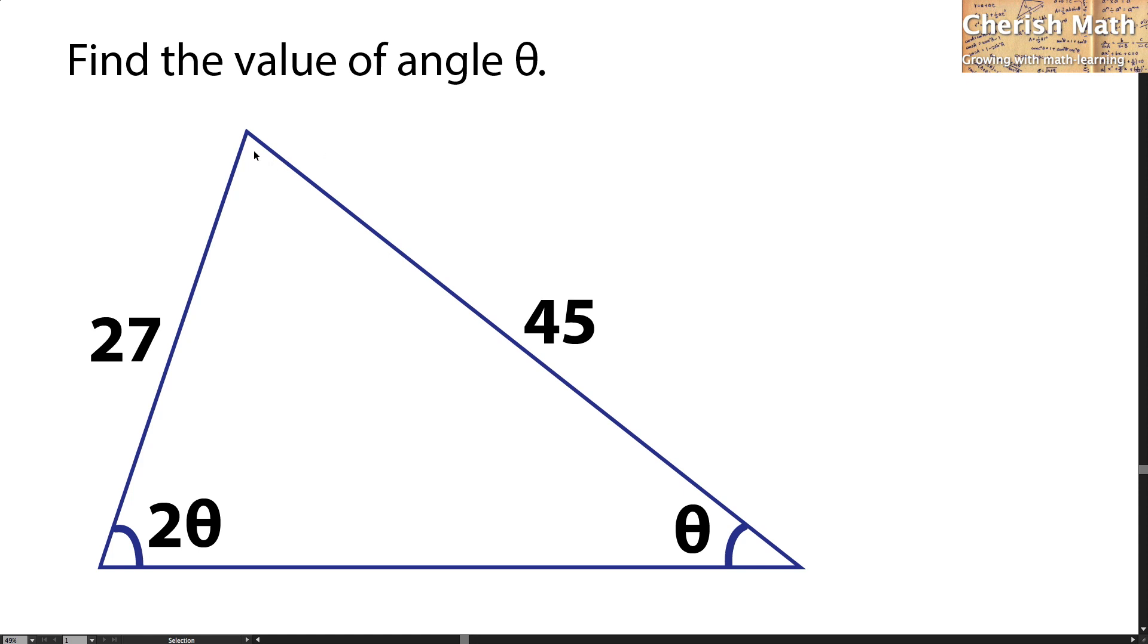This is a triangle with given sides as 27 units and 45 units. This angle is 2 theta and this angle is theta. We want to find what is the value of theta.